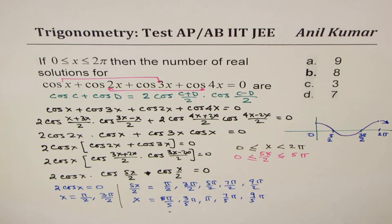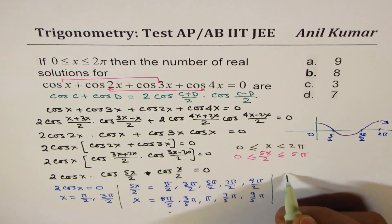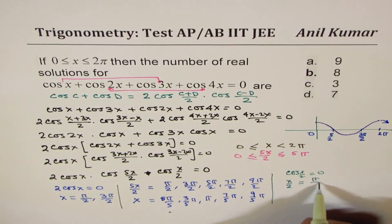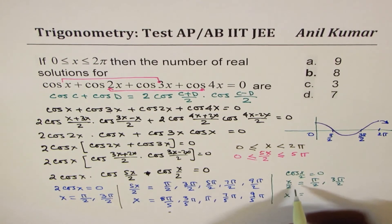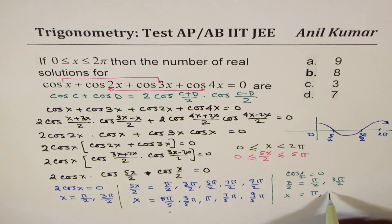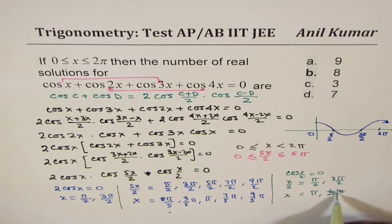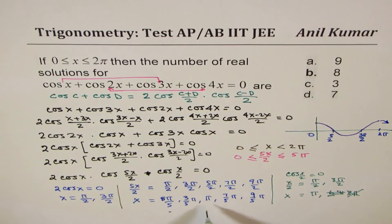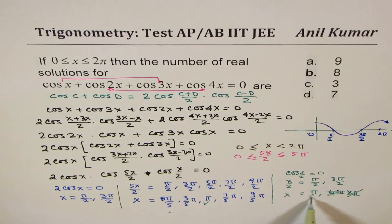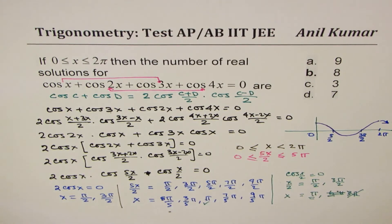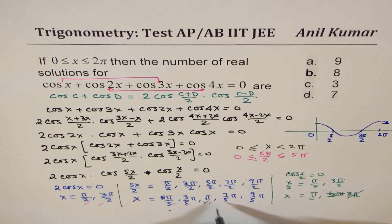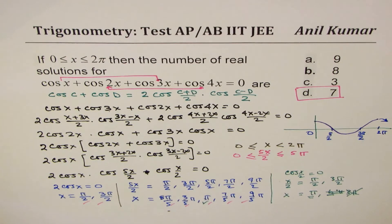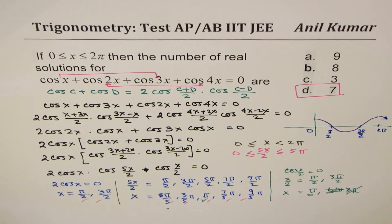Now let's find solutions for cos(x/2) = 0. This means x/2 = π/2 or 3π/2, so x = π or x = 3π. But 3π is outside [0, 2π], and x = π has already been counted in the previous case. So cos(x/2) = 0 contributes no new solutions. Therefore the total number of solutions is 7, which is answer option D.